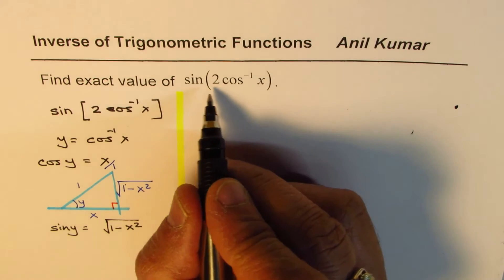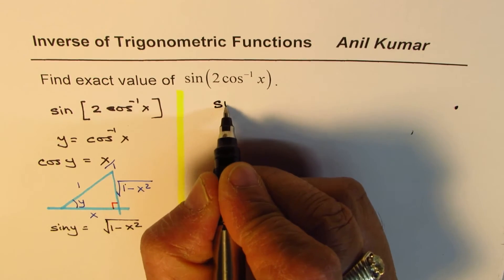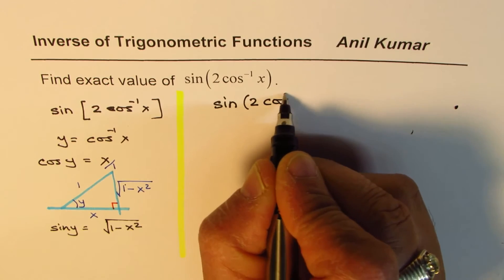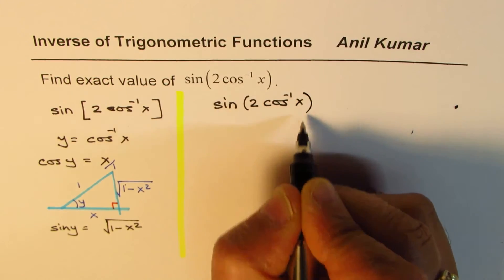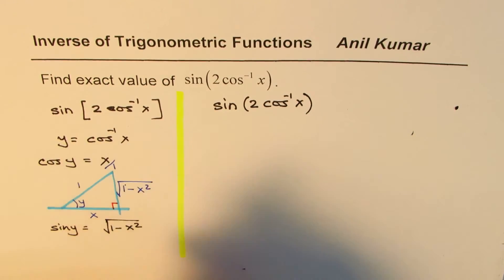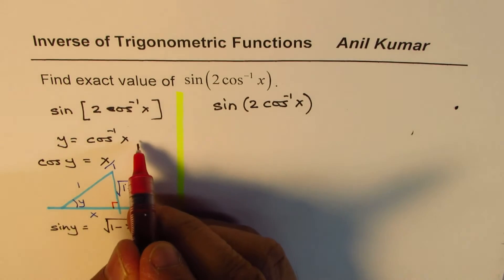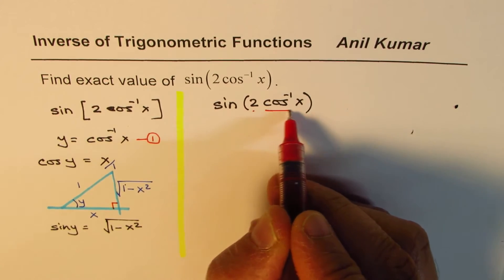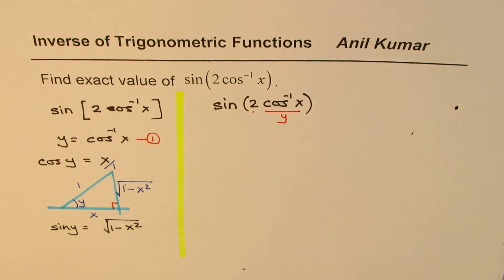Now let's cut back to the question. The question is sin(2cos⁻¹x). Now cos⁻¹x is y, so we substituted this. So this portion is y. We'll substitute y here. What do you get?